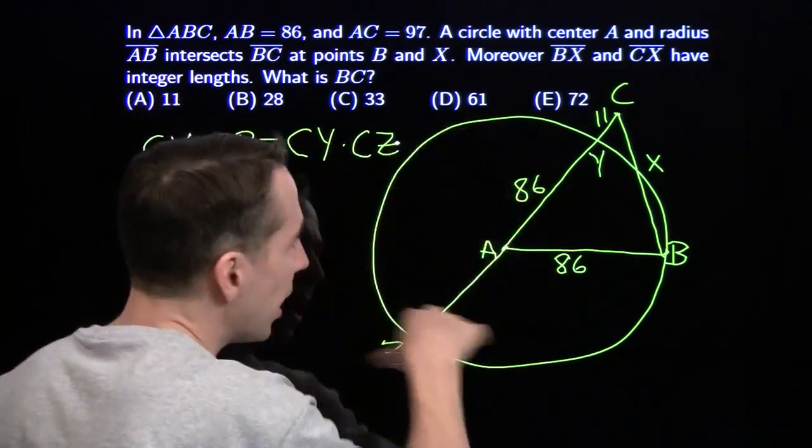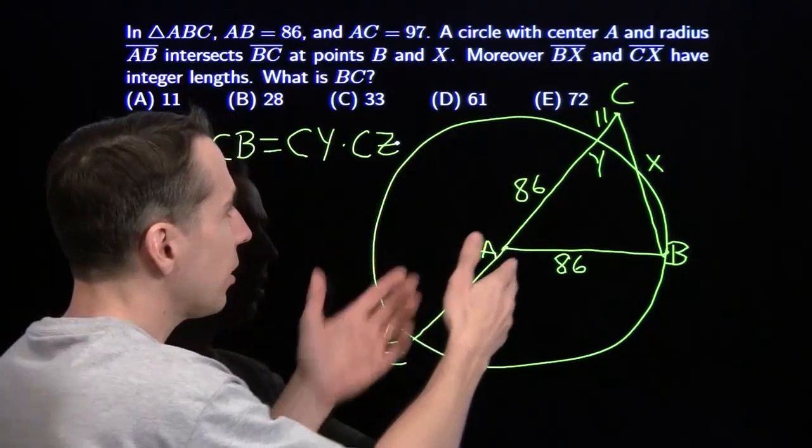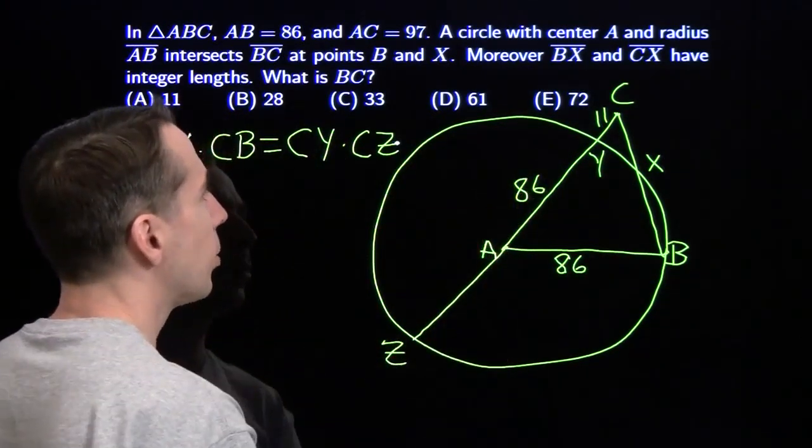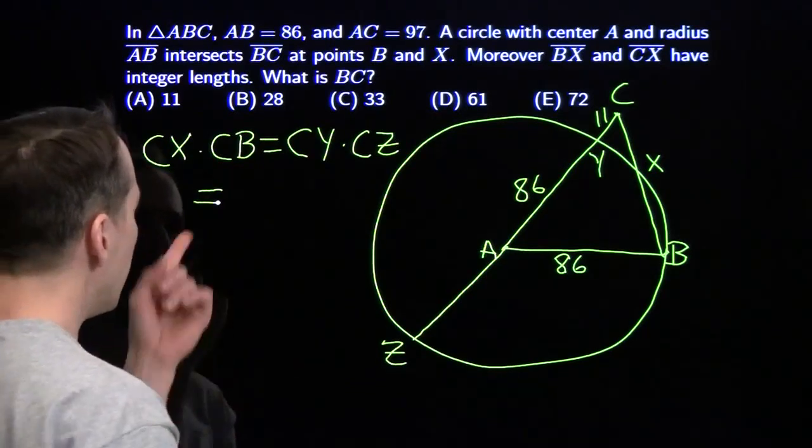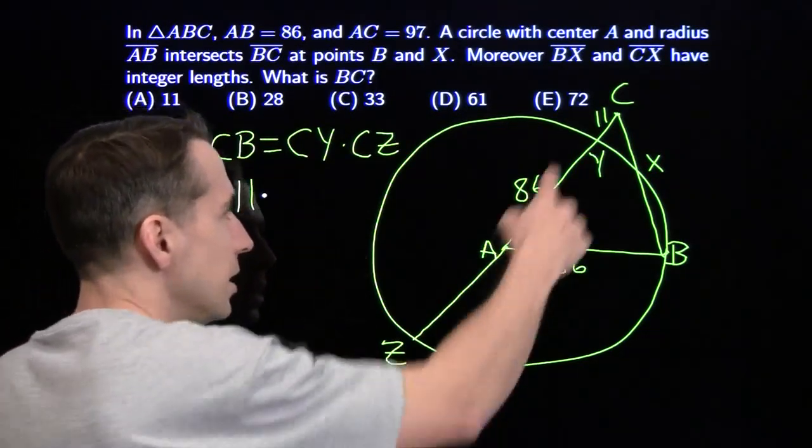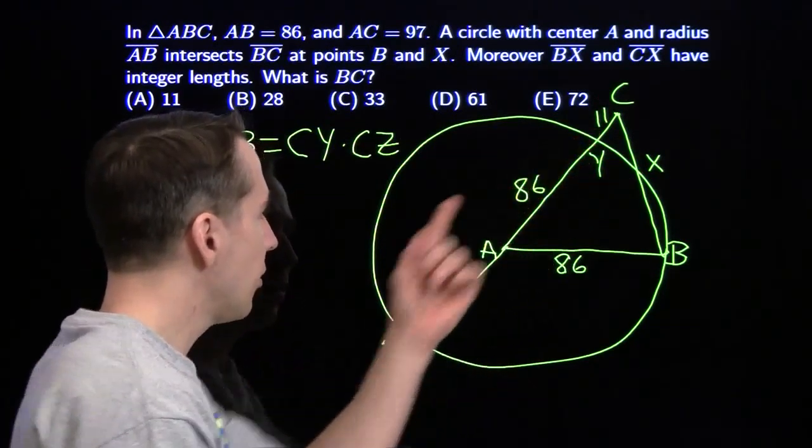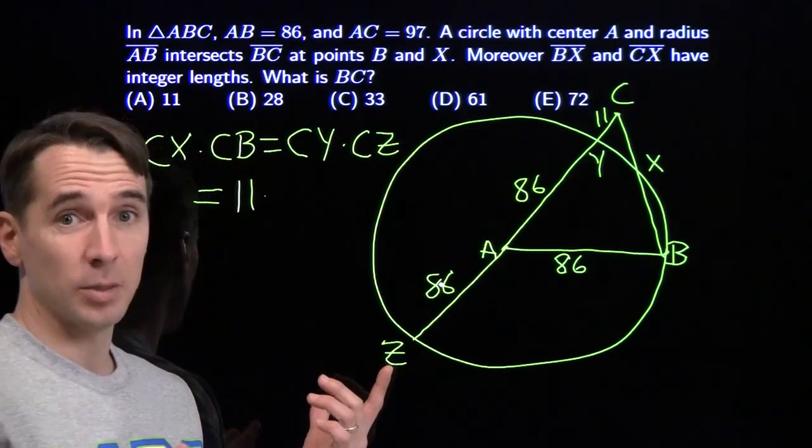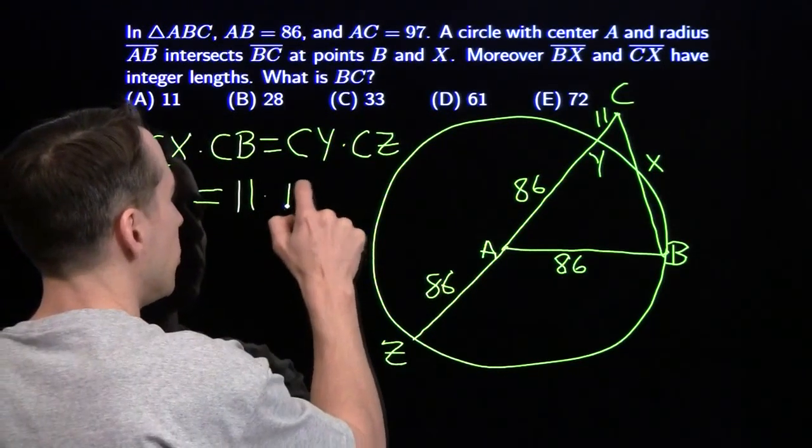Very powerful relationship that I always think of when I have lengths of a secant or chords or something like that. Now, what we've got in this problem right here, well now we know CX times CB equals CY is 11, and CZ coming all the way across, 11 plus 86, this is also, our radius is 86, 86 plus 97 gives us 183.